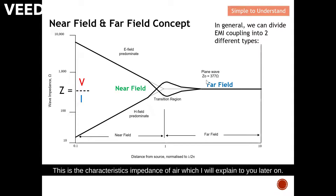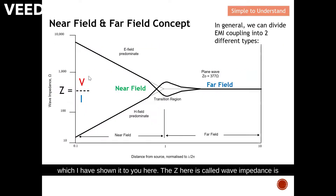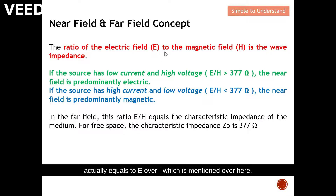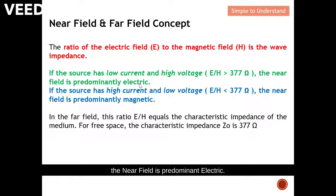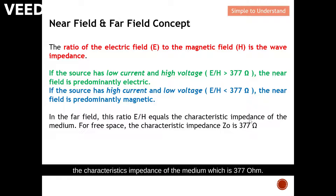377 ohms is the characteristic impedance of air, which I will explain later on. The ratio of the electric field to the magnetic field is called the wave impedance, Z, which equals E over H. If the source has low current and high voltage, meaning E over H is greater than 377 ohms, the near field is predominantly electric. If the source has high current and low voltage, meaning wave impedance is less than 377 ohms, the near field is predominantly magnetic. In the far field, the ratio E over H equals the characteristic impedance of the medium, which is 377 ohms.